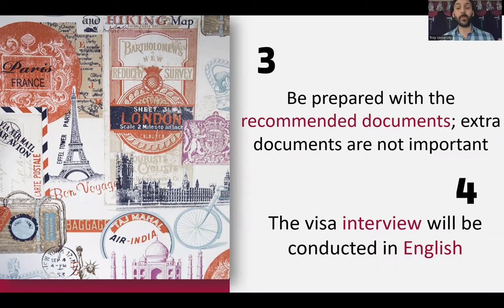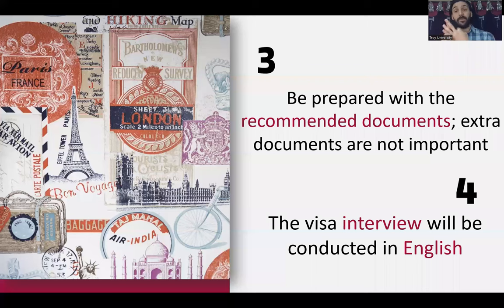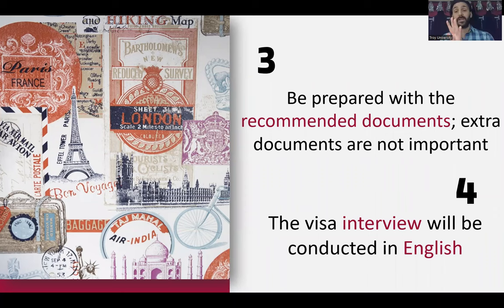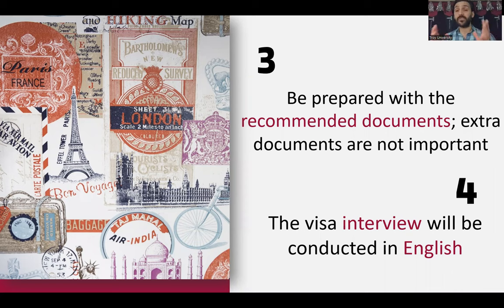Fact three: be prepared with the recommended documents — extra documents are not important. The key documents are your I-20 or DS-2019, DS-160 confirmation page, I-901 fee receipt, passport, admission letter, and if applicable a scholarship letter. All documents must be in printed paper form.